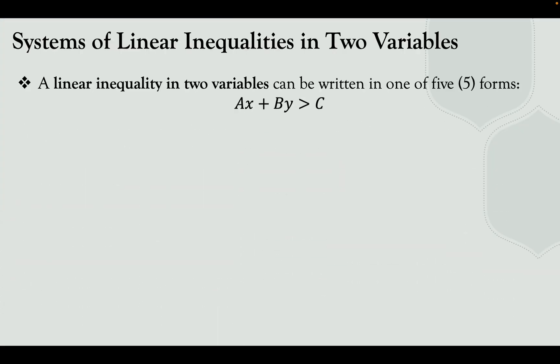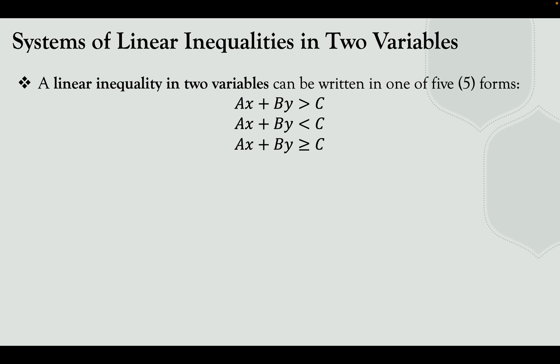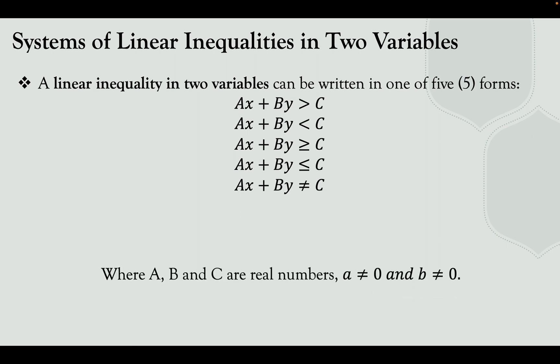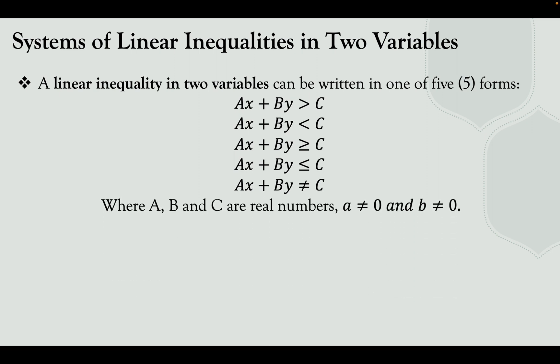A linear inequality in two variables can be written in one of five forms. These are: ax plus by greater than c, ax plus by less than c, ax plus by greater than or equal to c, ax plus by less than or equal to c, and ax plus by is not equal to c. Where a, b, and c are real numbers, and a must not equal zero and b must not equal zero.